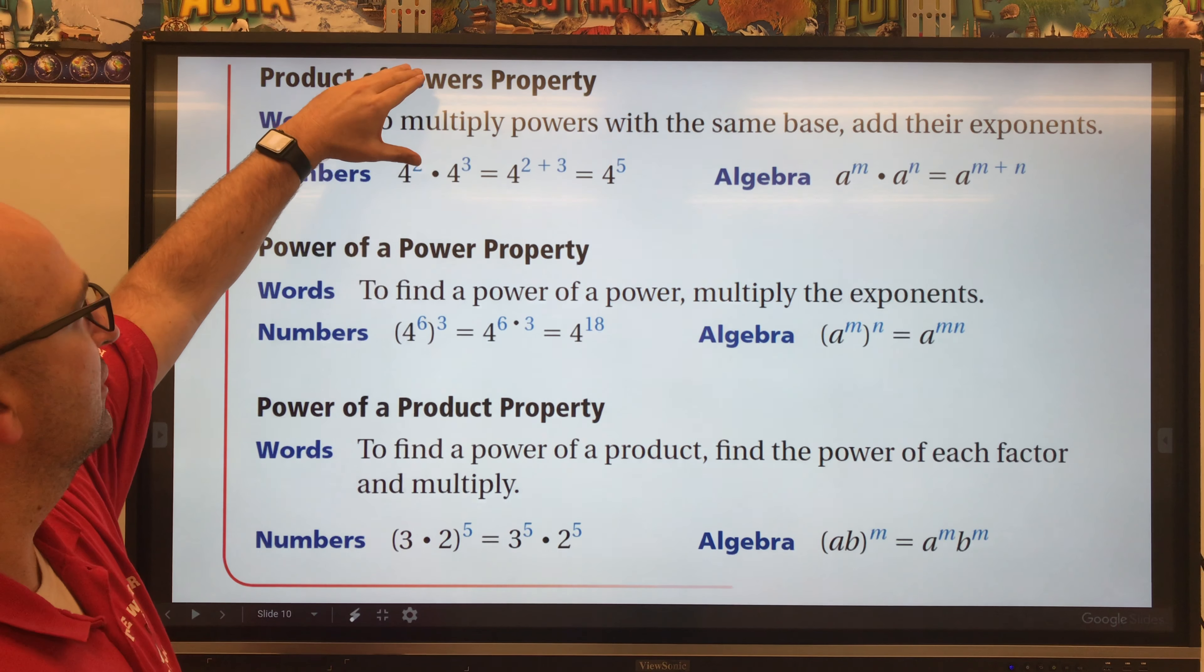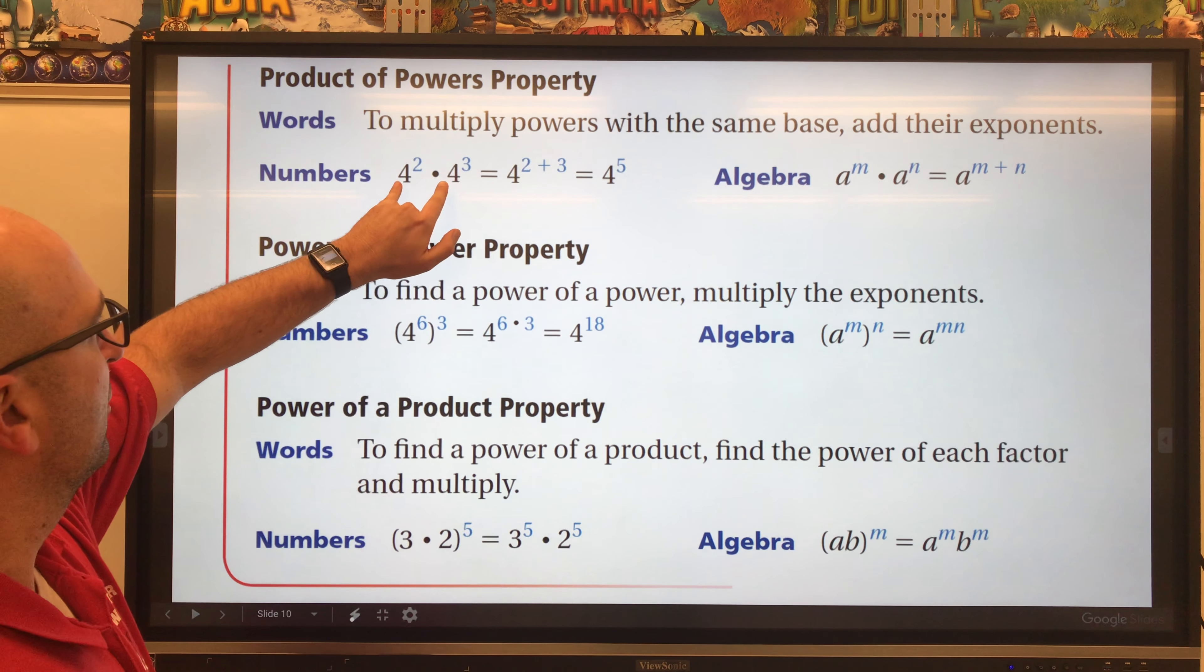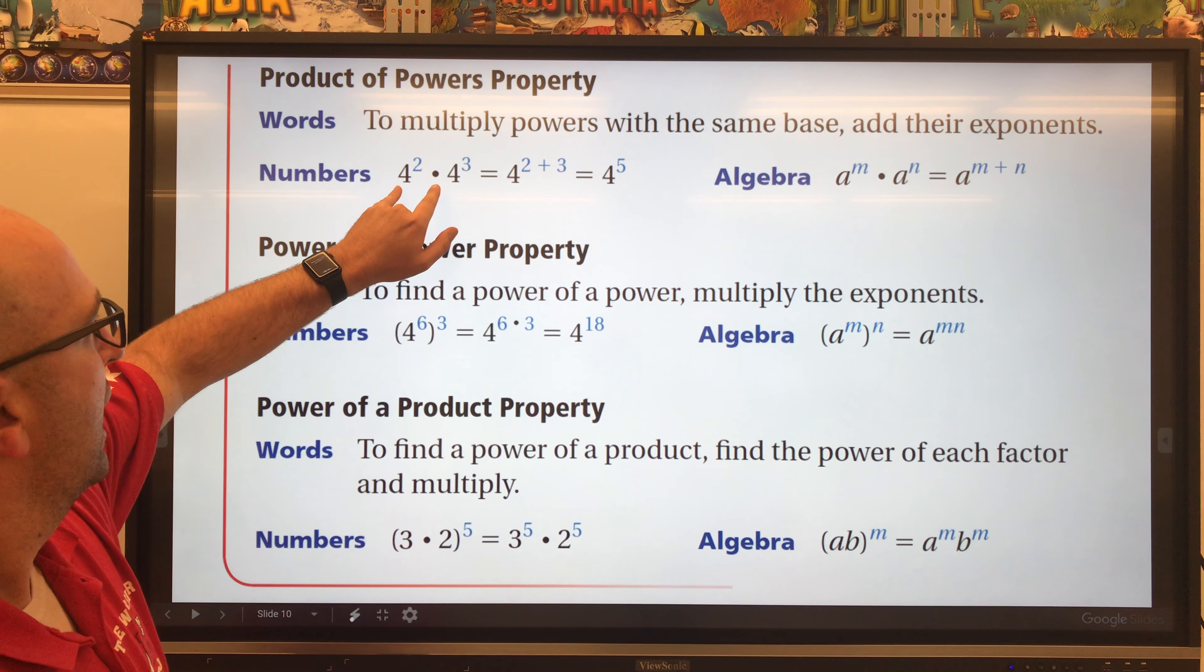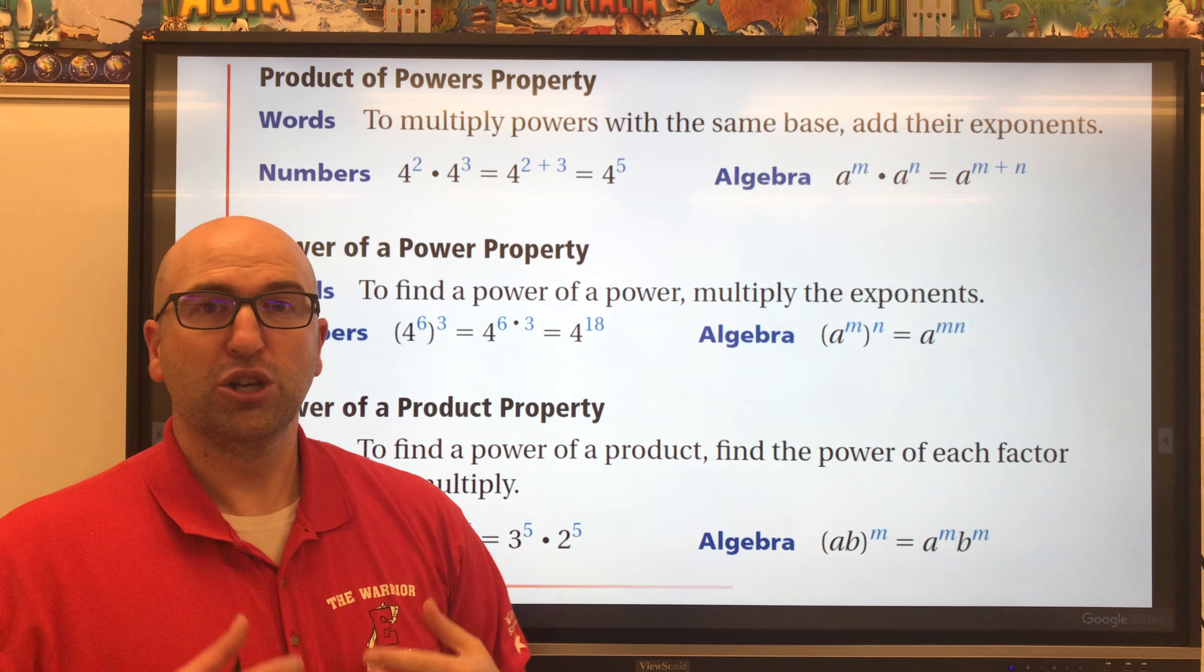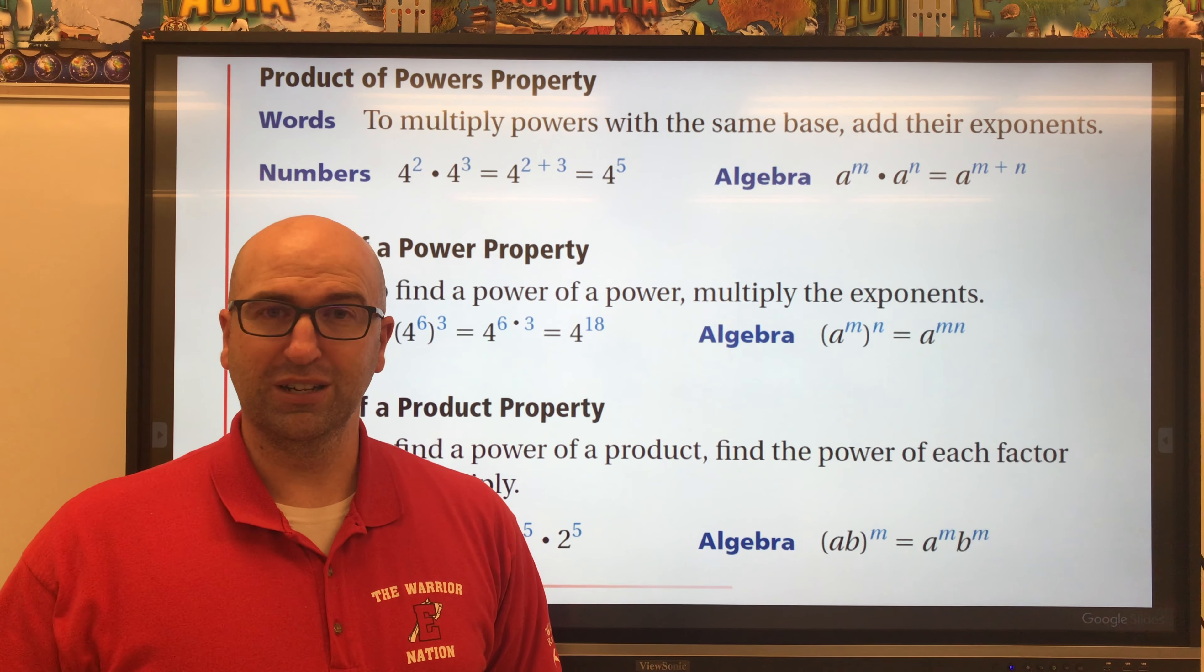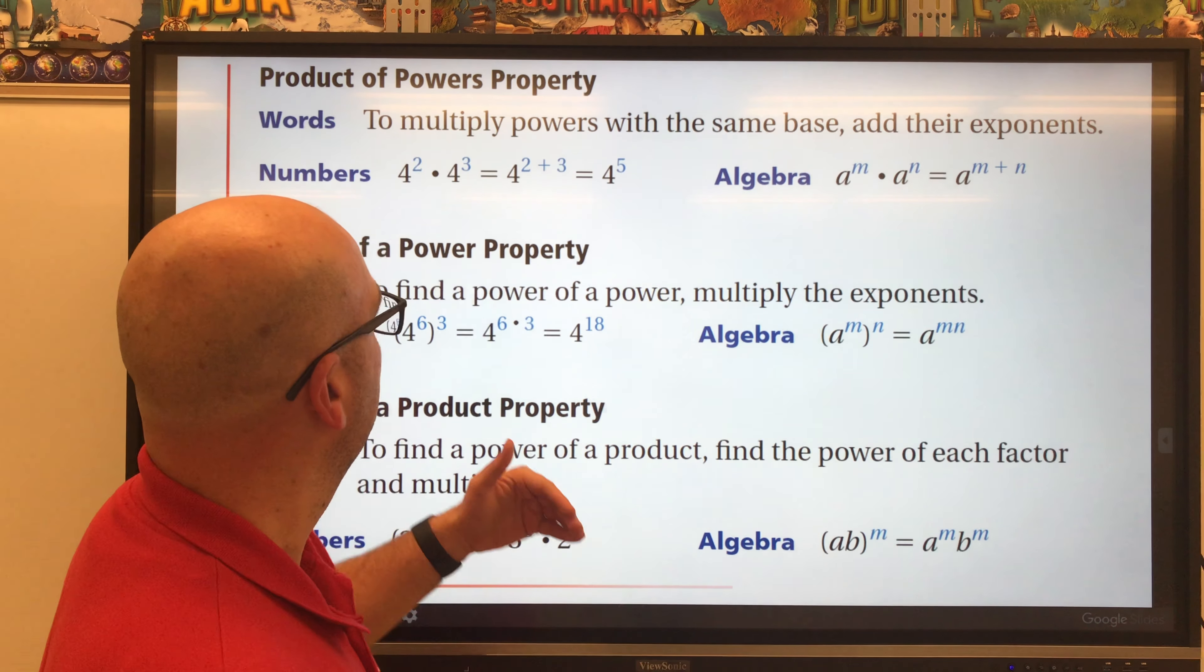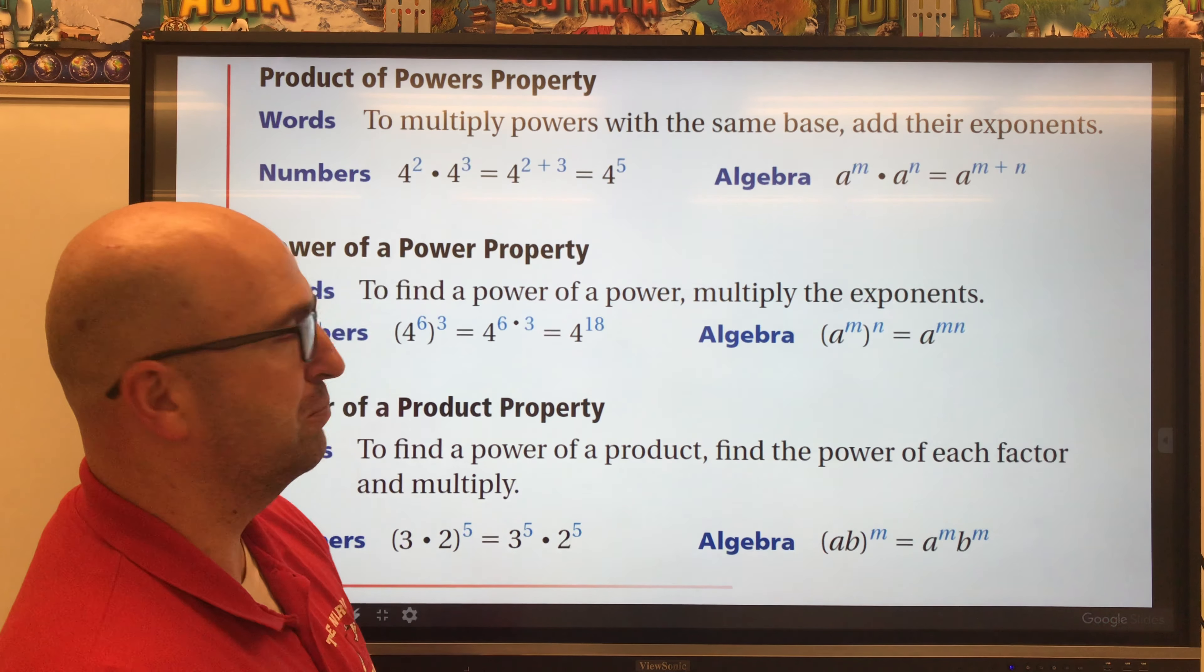Let's look at Product of Powers Property first. So here we have a number and our base is the same. Our base is four and we're multiplying four squared times four cubed. When we are multiplying exponents, it's really easy to write the new exponent because you're just going to add the two exponents.